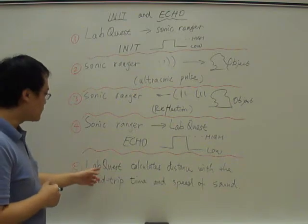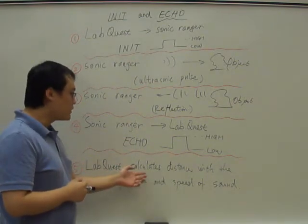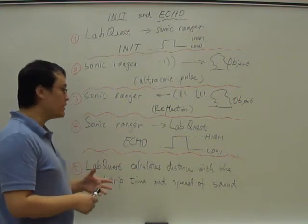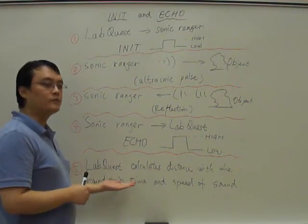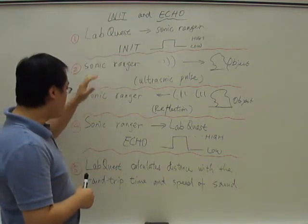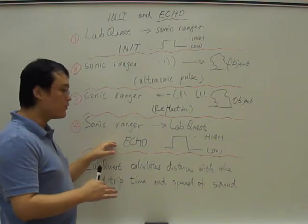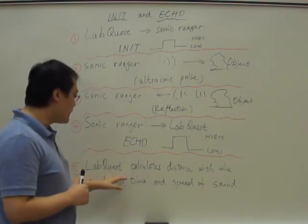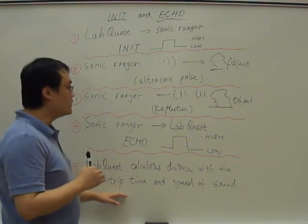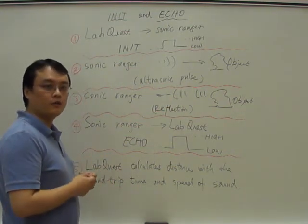As soon as LabQuest detects the echo line has been pulled high, it actually calculates the distance based on the roundtrip time. Basically, it sends out the request in step one and it gets the reply in step four. So it knows the time between the four steps. And with that time, which is the roundtrip to the object and also the speed of sound, it is able to calculate the distance.